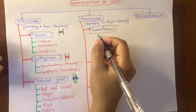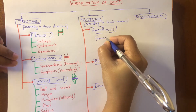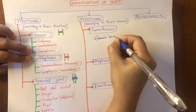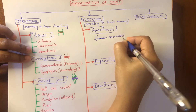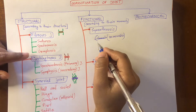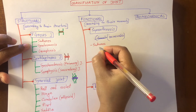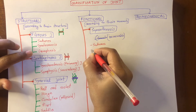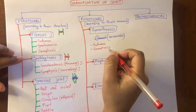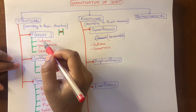Synarthrosis is an immovable joint, where no functional movement is allowed. Examples include suture joints and gomphosis. So synarthrosis joints are similar to fibrous joints.